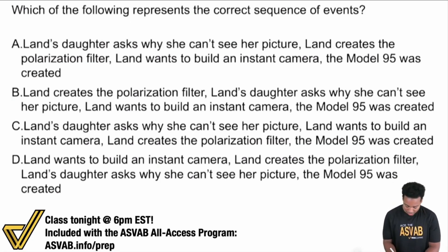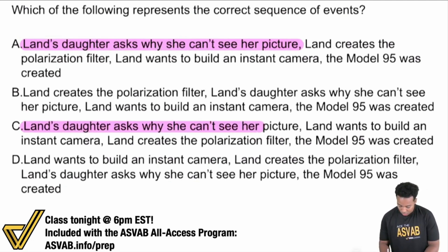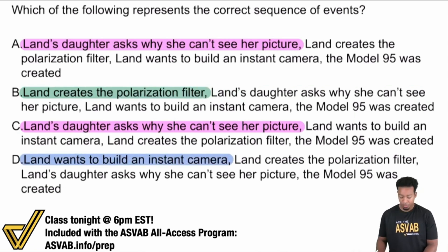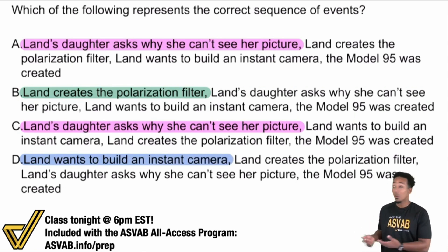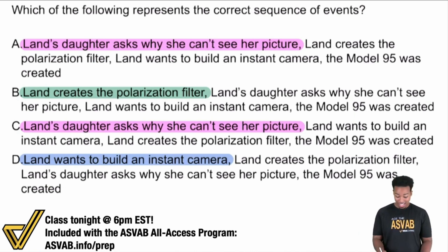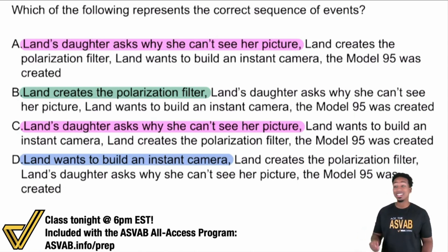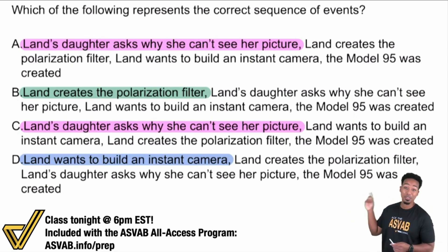Looking at the answer choices: A — Lan's daughter asks why she can't see her picture. C also has Lan's daughter asks why she can't see her picture. Then we see Lan creates the polarization filter, and Lan wants to build an instant camera. If we're looking at a sequence of events, one of these has to happen first. Your objective is simply to figure out whether the daughter asking, creating the polarization filter, or building the instant camera comes first. When you find which one comes first, you can eliminate all other choices — and sometimes you can do that in as quickly as 30 seconds. You have two minutes per question on paragraph comprehension, so use this strategy to your advantage.